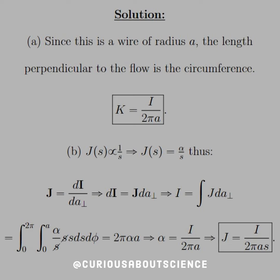Alright, so let's put these together to find a solution. For part A, since we know that this is a wire of radius a, the length perpendicular to the flow is just the circumference of that wire. So that's why we have K equals I divided by 2πa. Those are all constants, so the rate of change is consistent.